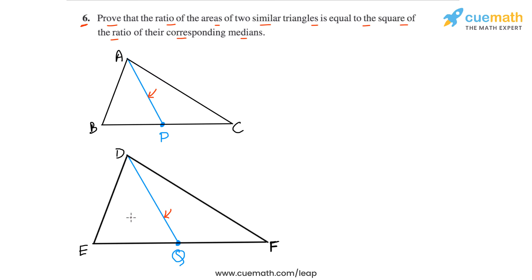It's based on two simple steps. First, we show that the ratio of medians is equal to the ratio of corresponding sides — so AP by DQ equals AB by DE. This is something we've already shown earlier as part of a previous question in this exercise. Then we make use of the fact that the area of two similar triangles is equal to the square of the ratio of corresponding sides. If the ratio of corresponding medians also equals the ratio of corresponding sides, then it follows that the ratio of areas equals the square of the ratio of corresponding medians.